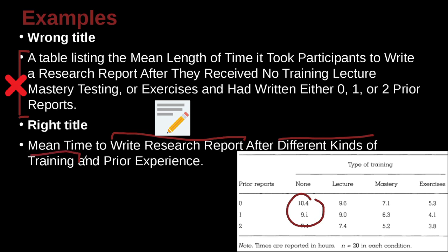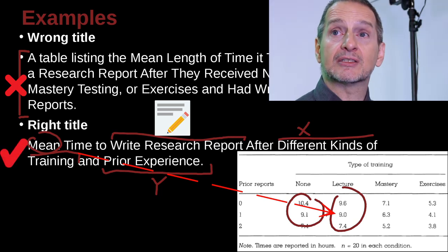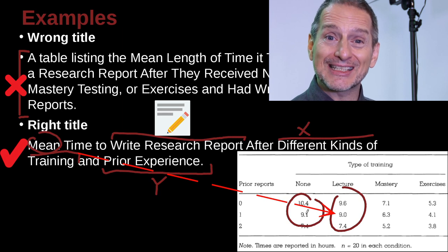So the different groups had different training, and the different groups had different experience. So these are like variables, right? So this is like variable X. This is like variable Y. And then the mean time is the measurements that's inside the table. That's pretty straightforward. That's a nice way to help me quickly see what is this table about. That's the key point.